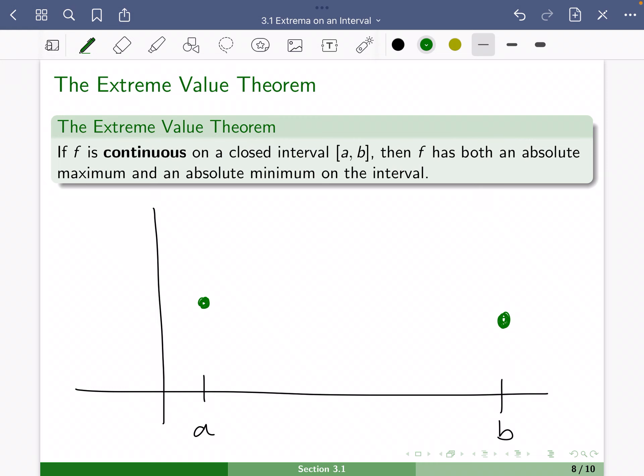If it's continuous on a closed interval from a to b, then f has both an absolute maximum and an absolute minimum on the interval. And so let's say we have some graph. It can do all kinds of stuff here.